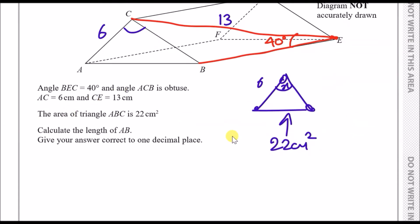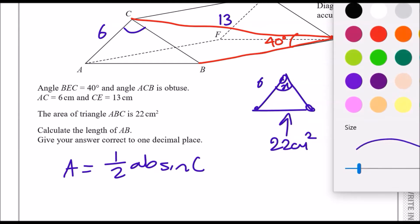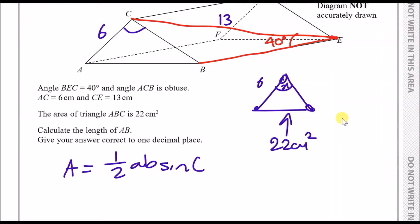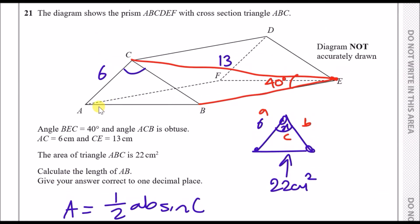One way to find the area of a triangle is to use the general formula: area equals half AB sine C, where AB are two lengths next to each other with angle C between them. If I relabel this triangle, I can think of it as A on the left, B on the right, and the big angle C in the middle. They want us to calculate the length AB, which is the long horizontal length — let's call it Y.